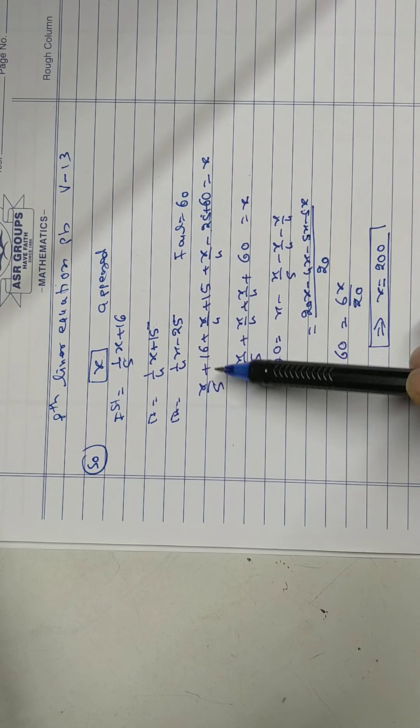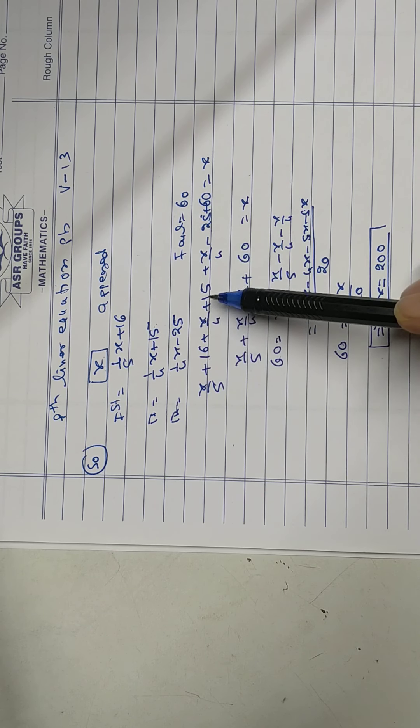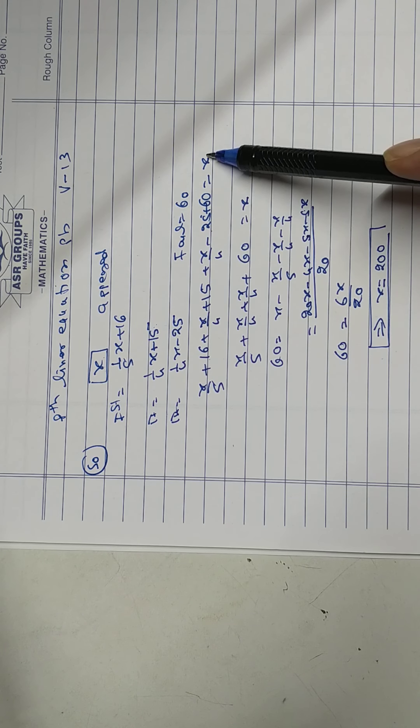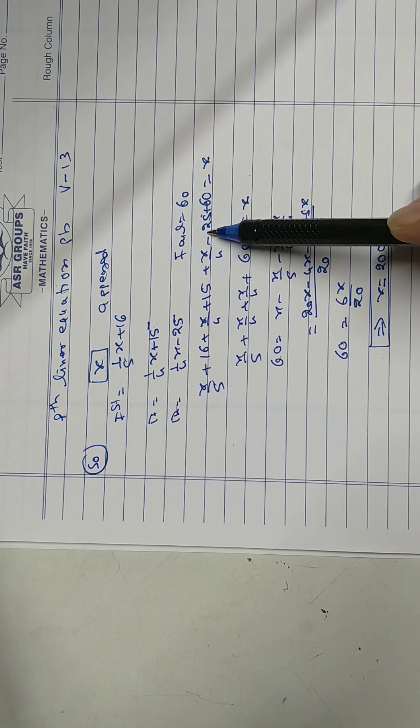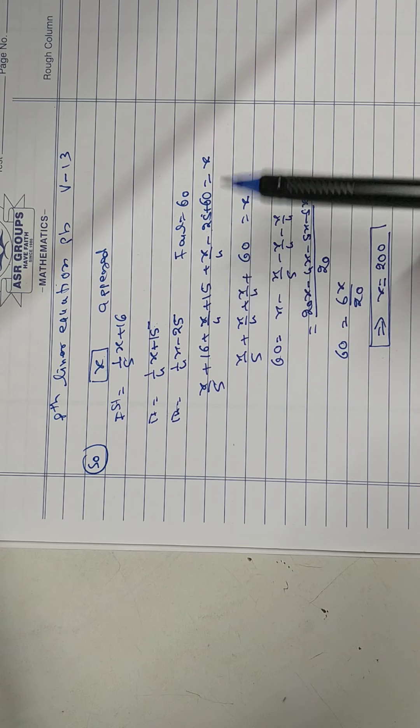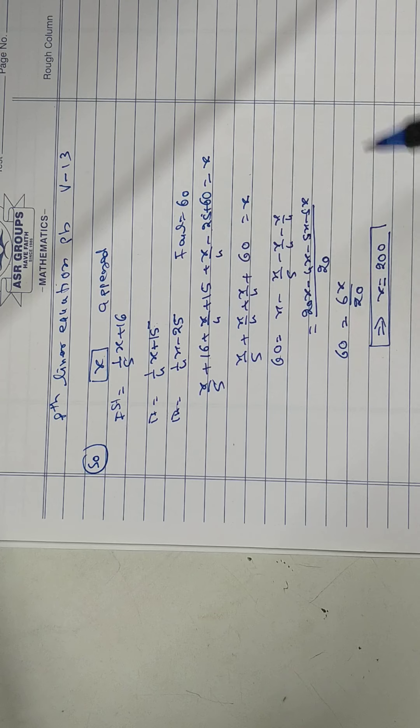60 minus 25 is 35, 35 plus 50 is 50, and the 60.